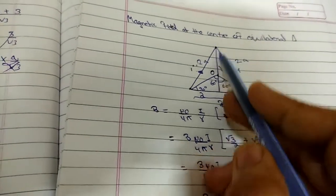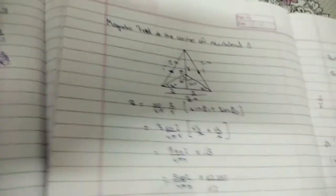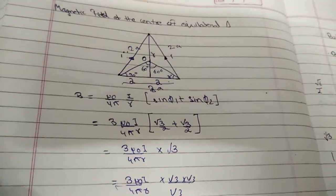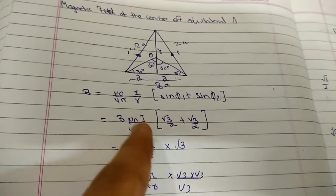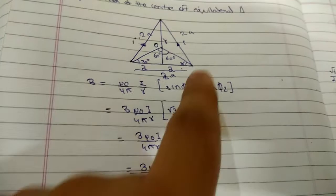We have drawn a perpendicular distance so it will be a on each side. According to Biot-Savart law for finite charges, we have the formula: μ₀i/4πr [sin φ₁ + sin φ₂].